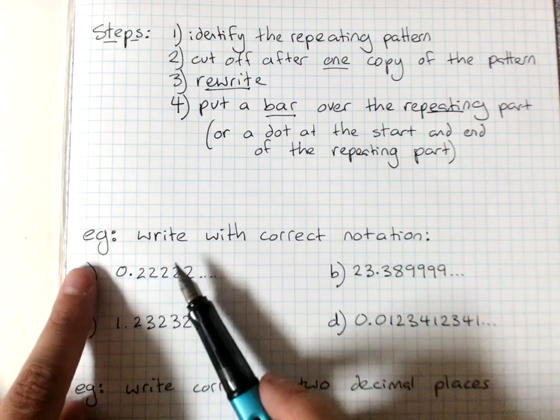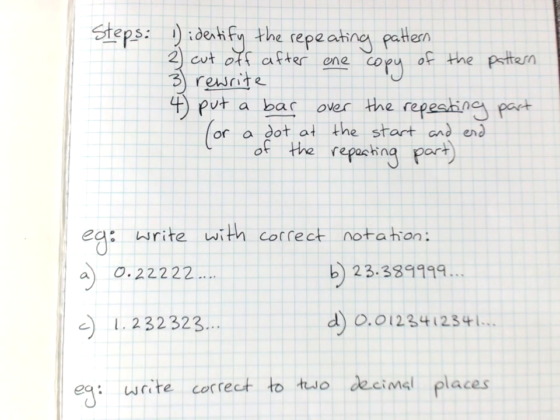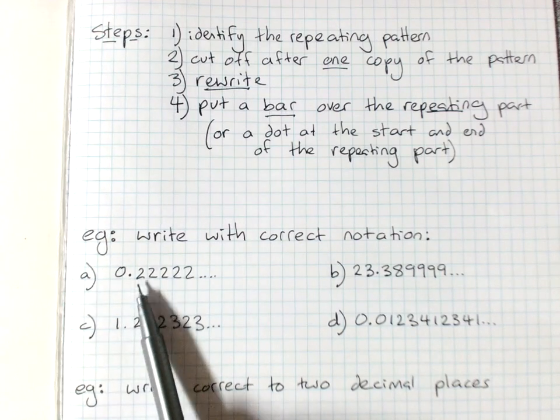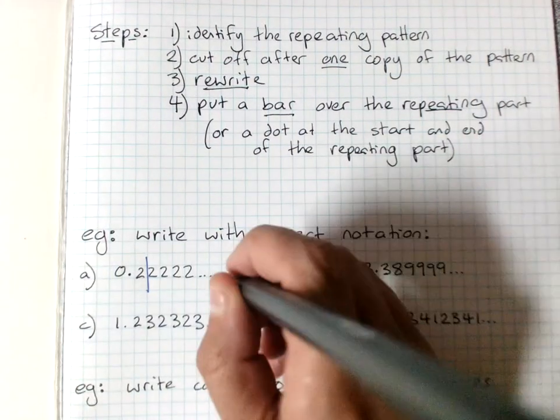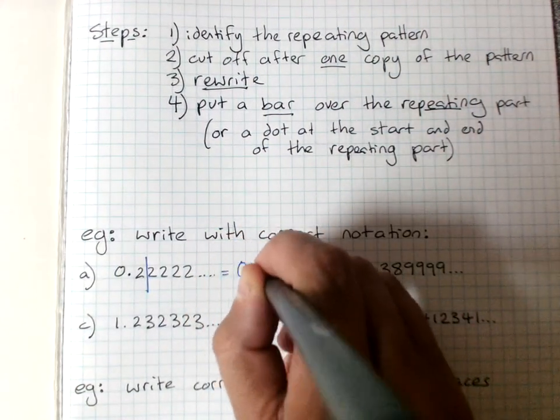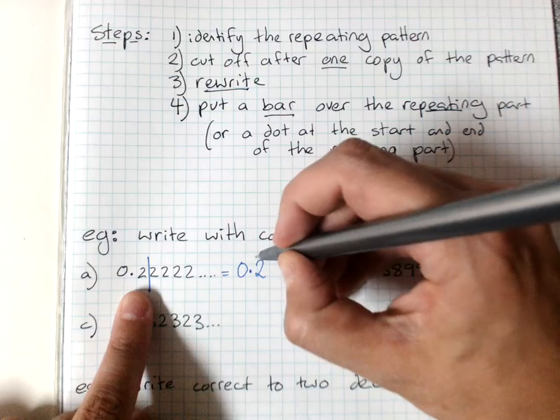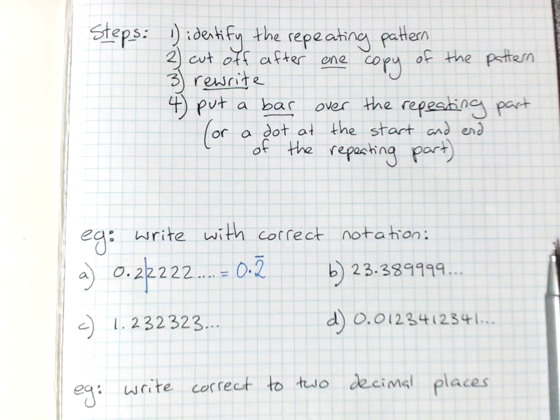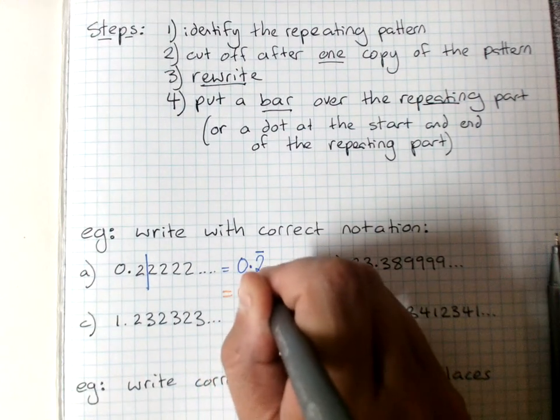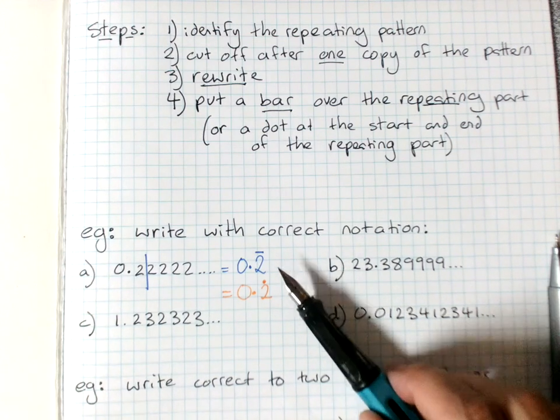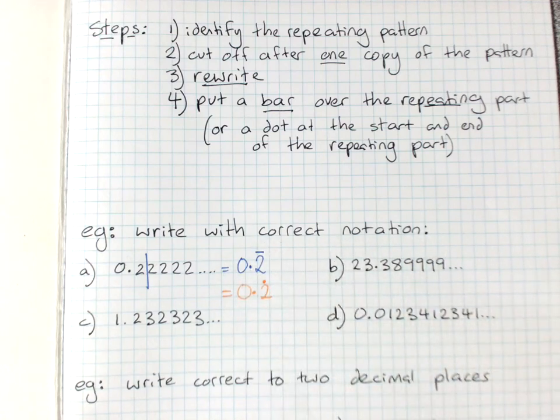So asking us to write these with correct notation. Step 1 for question A, identify the repeating pattern. It's a 2. Cut off after one copy of the repeating pattern and rewrite with just the bit before you cut it off. Put a bar over the repeating pattern. And we're done. We could have done that with a dot, 0.2 with a dot over the 2. Either of those says that pattern repeats forever. That 2 keeps on going forever. I'm quite happy for you to only learn one of these strategies.